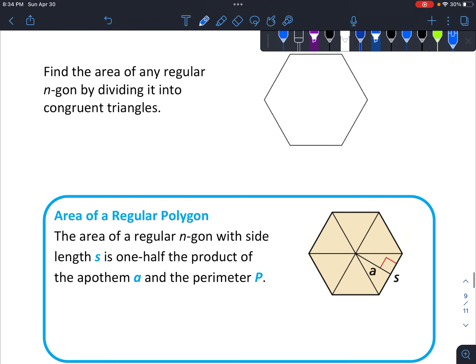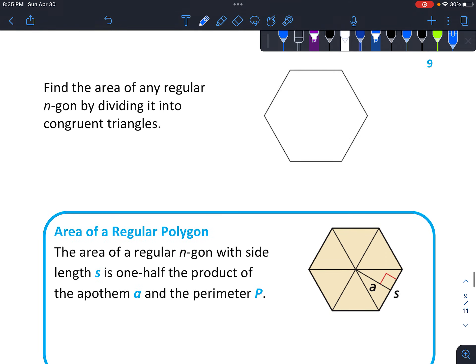Alright, let's look at this next part. So it says, find the area of any regular n-gon by dividing it into congruent triangles. So notice if we were to divide this into triangles. And they're all the same because this is a regular polygon.